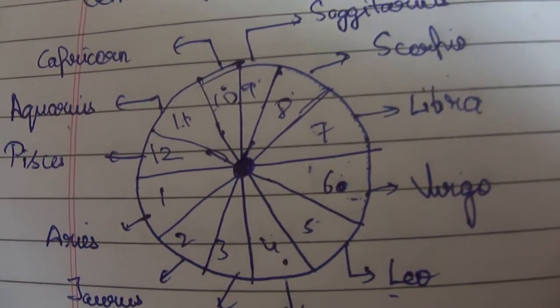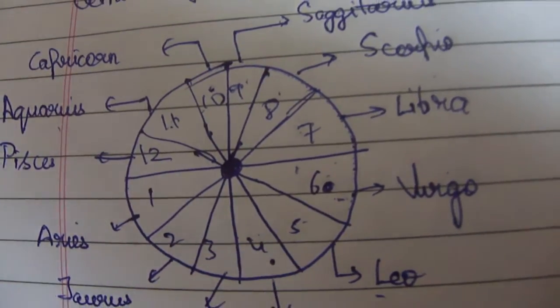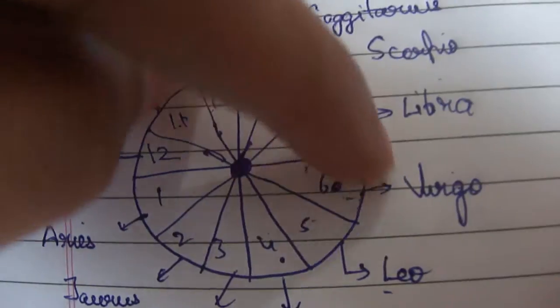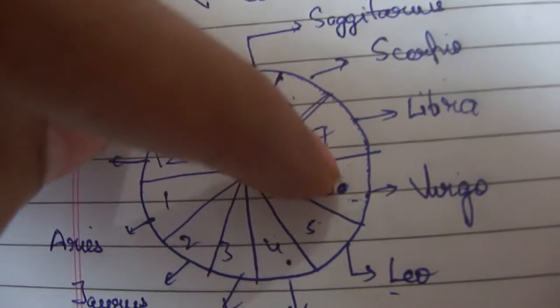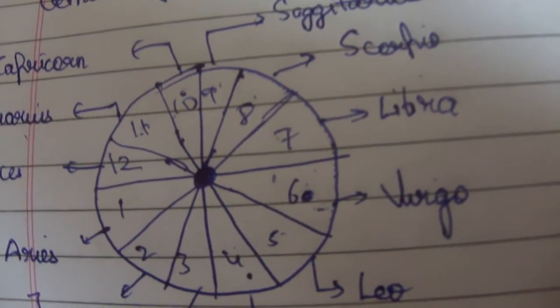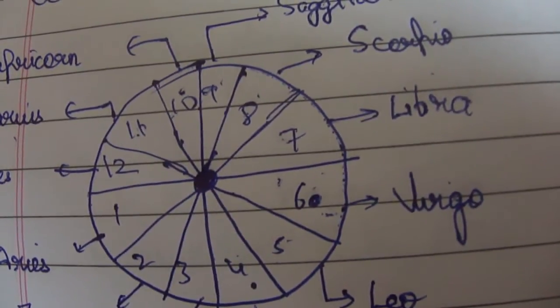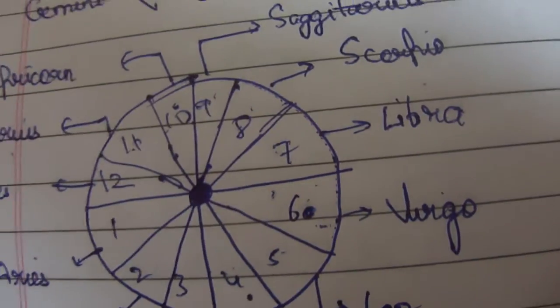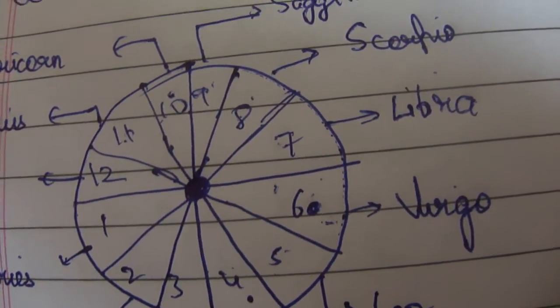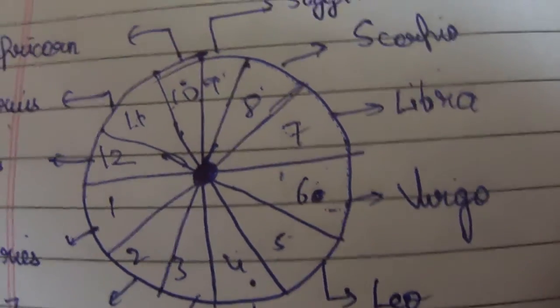That is how Sadesati means seven and a half years, and that means with respect to the moon sign. With respect to moon, I have taken the example as Virgo - you come to the 12th, first, and the second house. If it remains there in these three houses, then that's called the Sadesati period, and it causes a lot of ill health and problems to the person. We'll be discussing that more in detail in our further videos. I'm Shwetank into Astrology. Do check my channel for more. Thank you, take care, bye.